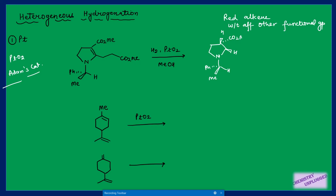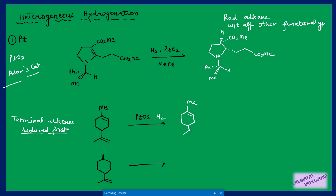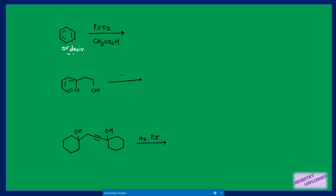If a molecule has more than one double bond, always remember terminal alkenes are reduced first. Using a limited amount of platinum oxide and one equivalent of hydrogen, only the terminal double bond is reduced. If both double bonds are terminal, both will be reduced. Benzene and its derivatives are also reduced by platinum oxide — for example, converting to cyclohexane. In another case, cyclization can occur followed by removal of nitrogen as ammonia to give a different product.